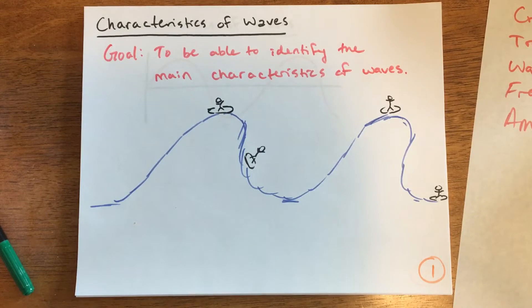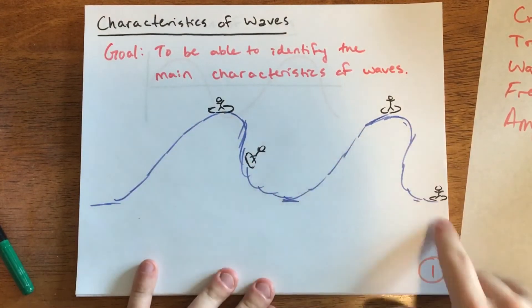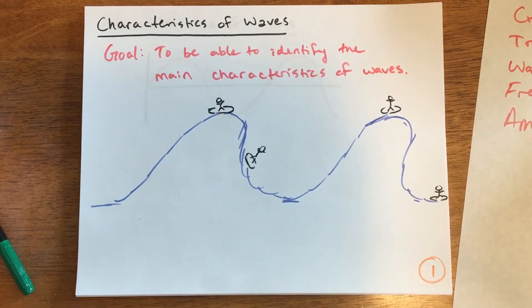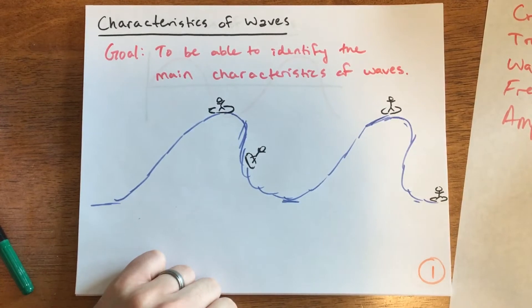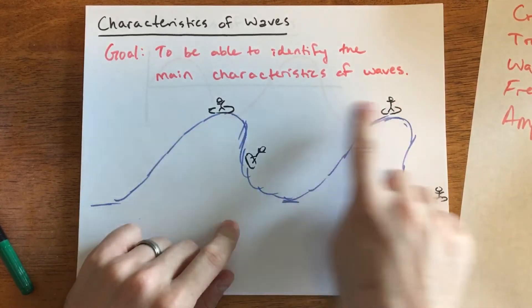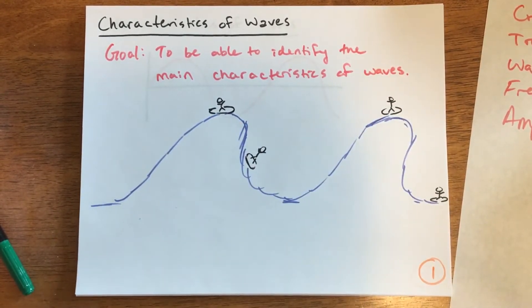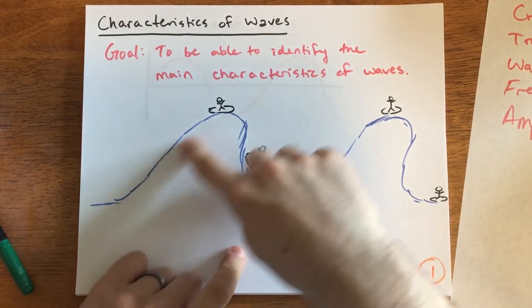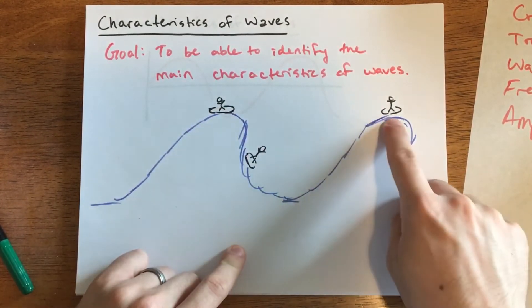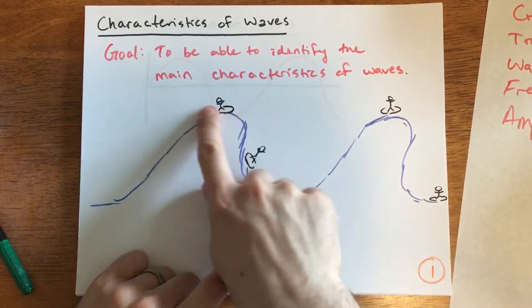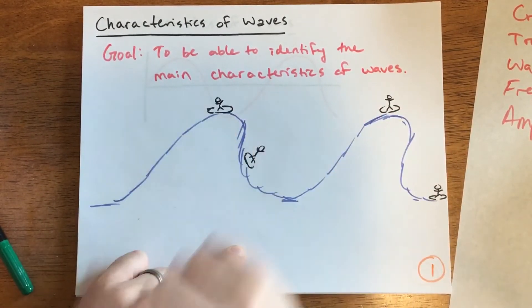When you think of a wave, most people think of a water wave in the ocean. We're demonstrating this with a surfer. He can be at the top of the wave, at the bottom, or at two separate peaks. You can see that each wave has a similar shape. These two are one complete wave apart.